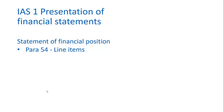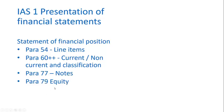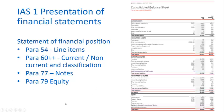IAS 1 then talks about the statement of financial position. It identifies the line items required to be disclosed, requires a current or non-current classification, and prescribes what should be disclosed in the notes. It requires the disclosure of equity, and because of these strict guidelines, a statement of financial position very consistently appears in a standard form in the general purpose financial report.